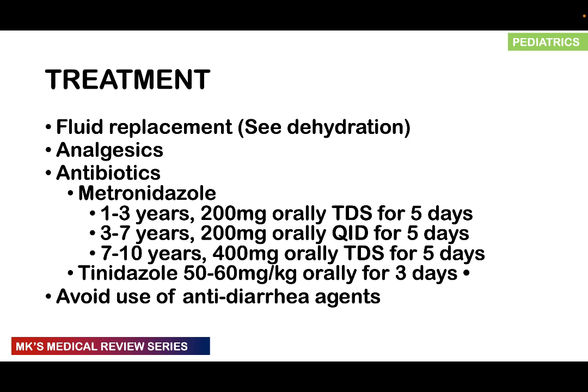For metronidazole dosing: ages 1–3 years, 200 mg orally three times a day for five days; ages 3–7 years, 200 mg orally four times a day for five days; ages 7–10 years, 400 mg orally three times a day for five days. Tinidazole can also be used as an alternative: 50–60 mg/kg orally for three days.